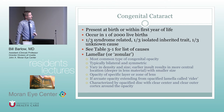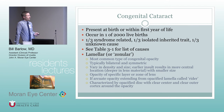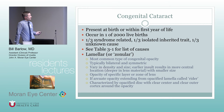Congenital cataracts by definition are present at birth or within the first year of life, occurring in approximately 1 to 2 per 1,000 live births. Roughly a third are syndrome-related, a third are isolated inherited, and a third are of unknown cause. A lamellar or zonular cataract is the most common type of congenital opacity, and many are bilateral and symmetric.